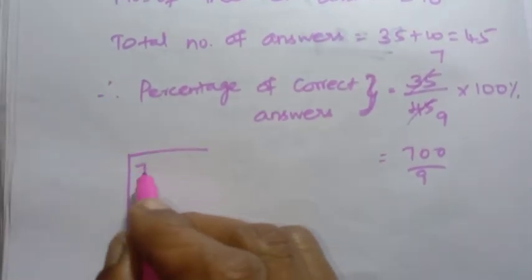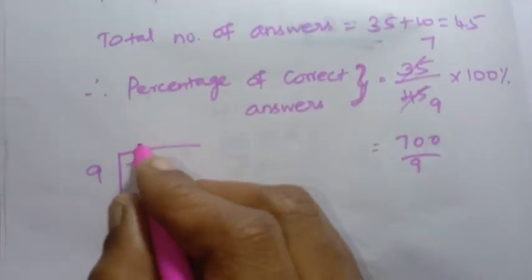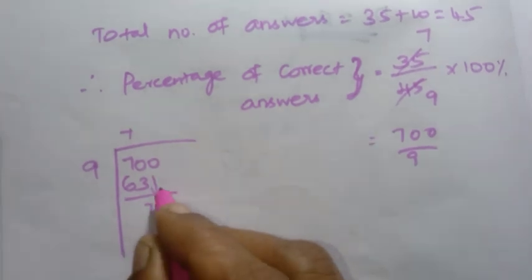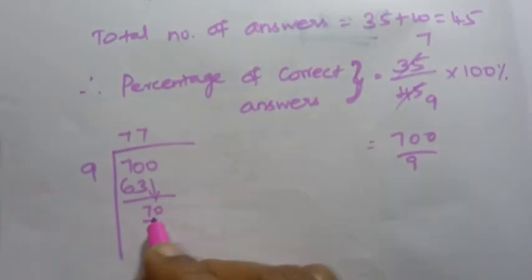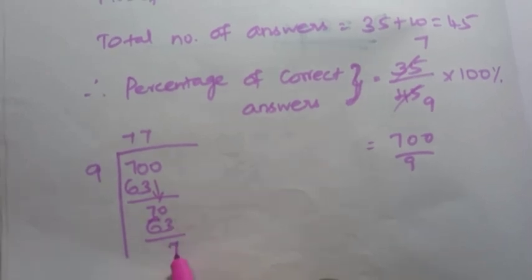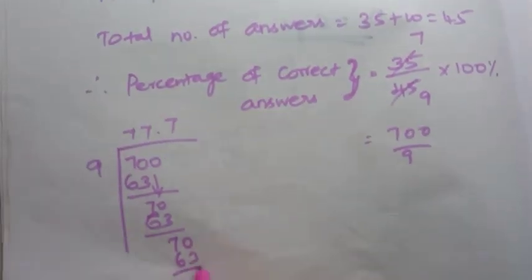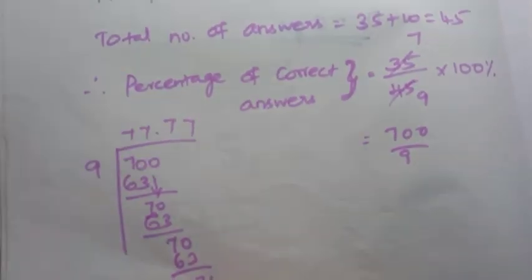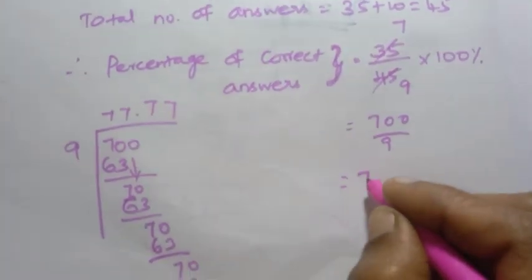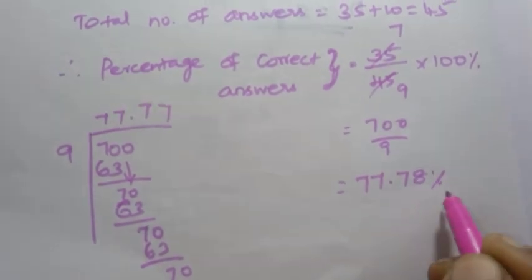Dividing 700 by 9: 9 sevens are 63, remainder 7. Bring down zero, again 70. Seven times 63, remainder 7 again. This repeats. So the percentage is approximately 77.78 percent.